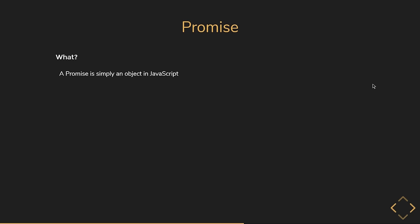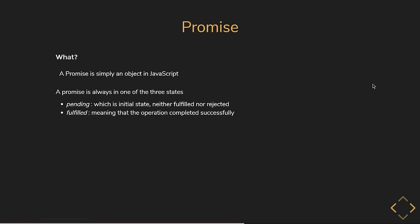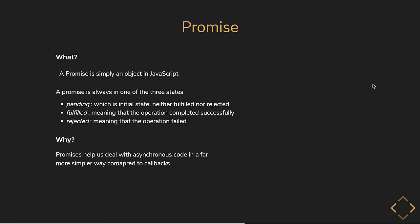Technically, a promise is simply an object in JavaScript, and a promise is always in one of three states: pending (the initial state, neither fulfilled nor rejected), fulfilled (the operation completed successfully), and rejected (the operation failed). Why would you use a promise? For one purpose: promises help us deal with asynchronous code in a far simpler way compared to callbacks. The callback hell we spoke about can be avoided with promises, and the code can be read in a simple synchronous way.